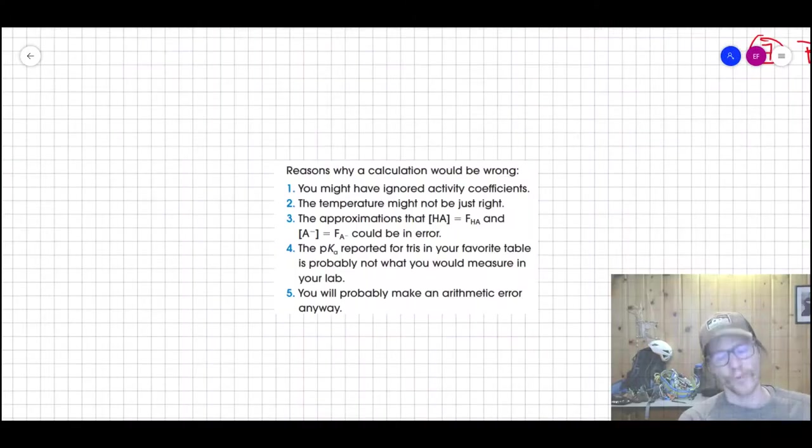So I've alluded to this along the way a couple times, but I just want to give you a little bit more perspective as to why, when you're making up a buffer and you use the Henderson-Hasselbalch and you're feeling really good about it, you mix these things up, you pop your pH probe in there, and then it's not what you're expecting. Usually it's close, as long as you did your math right, but it's not spot on. Why is that?